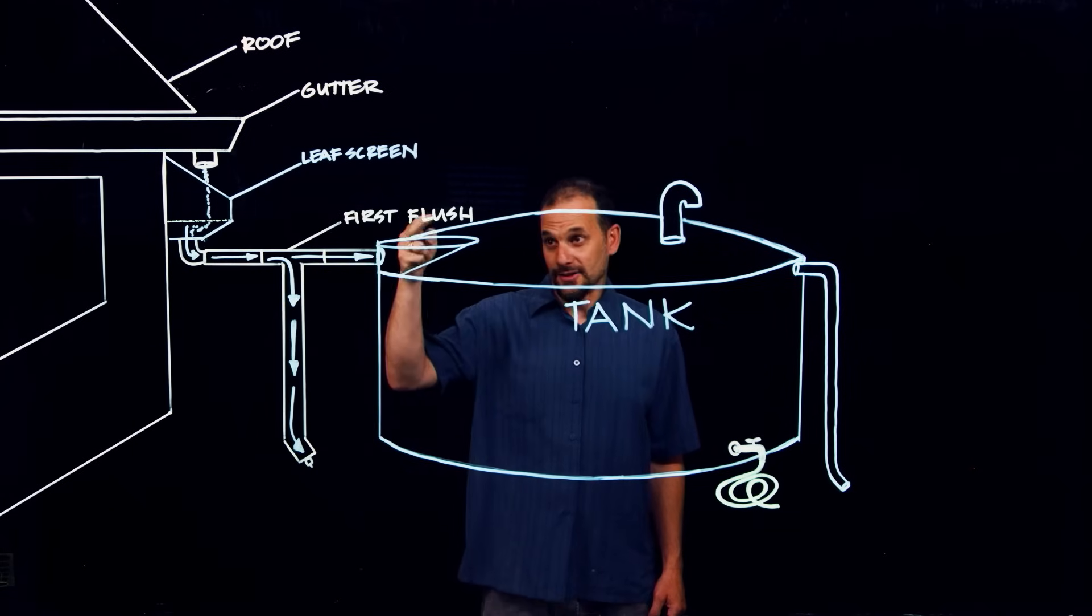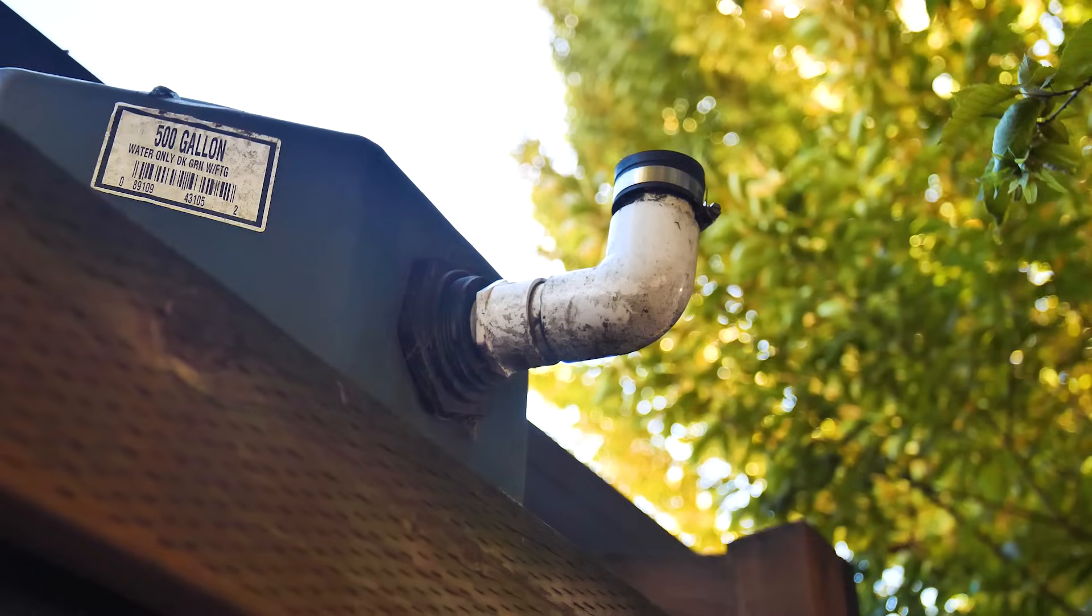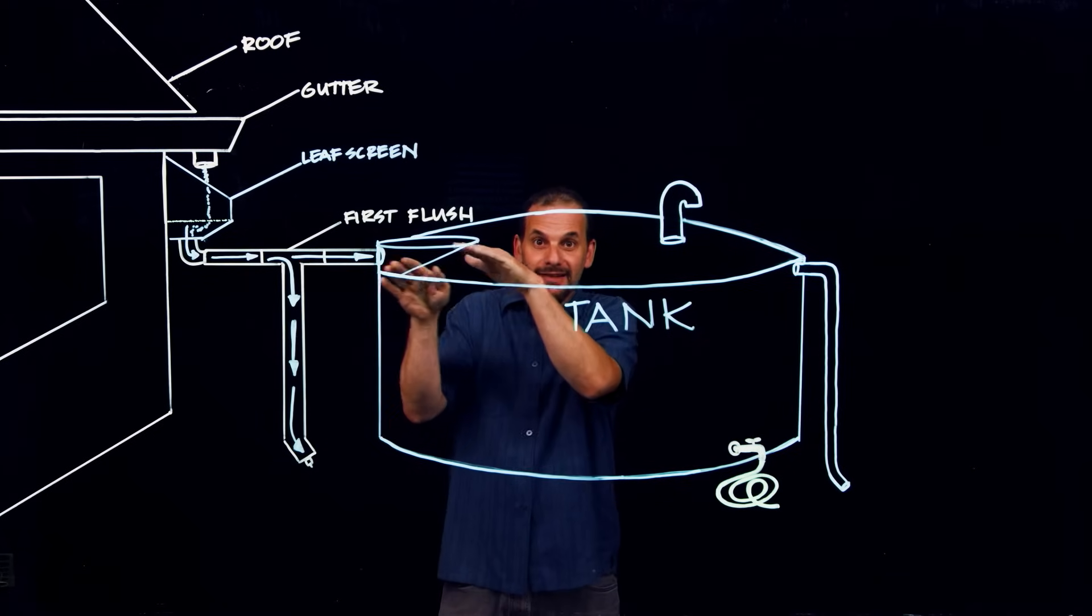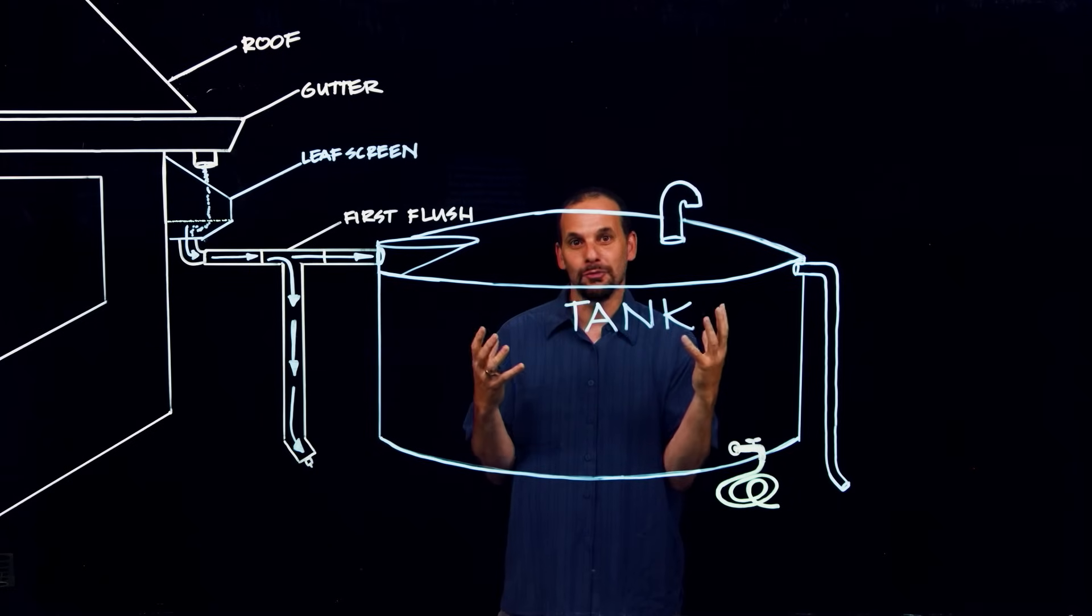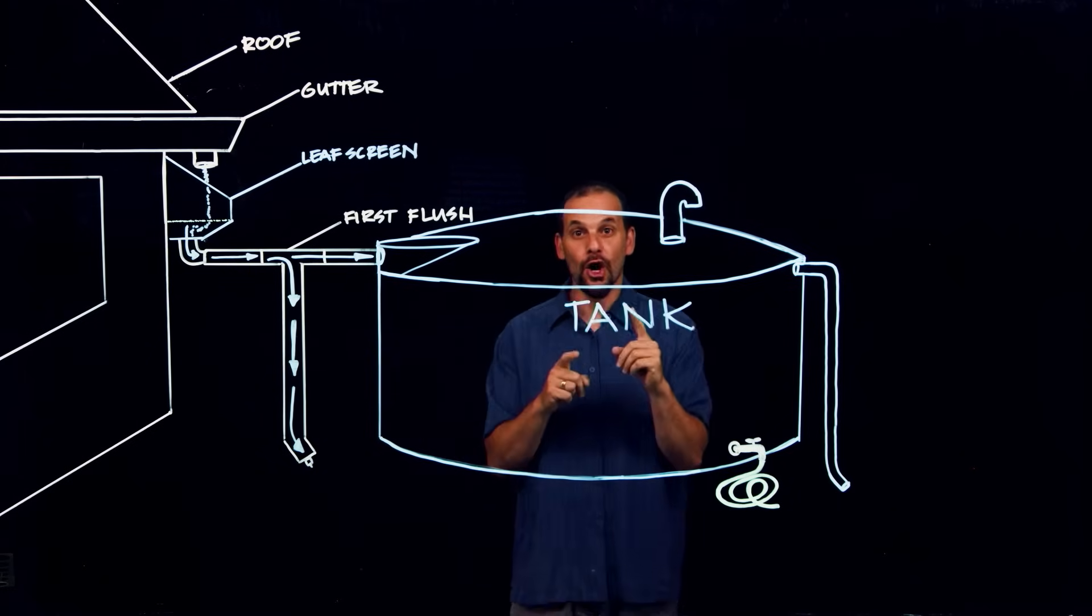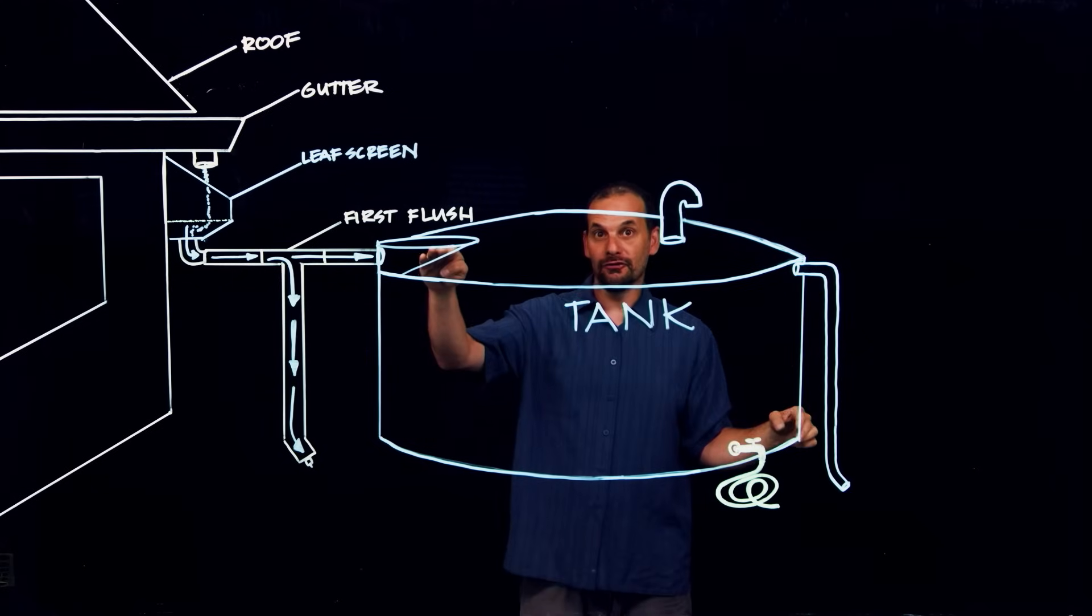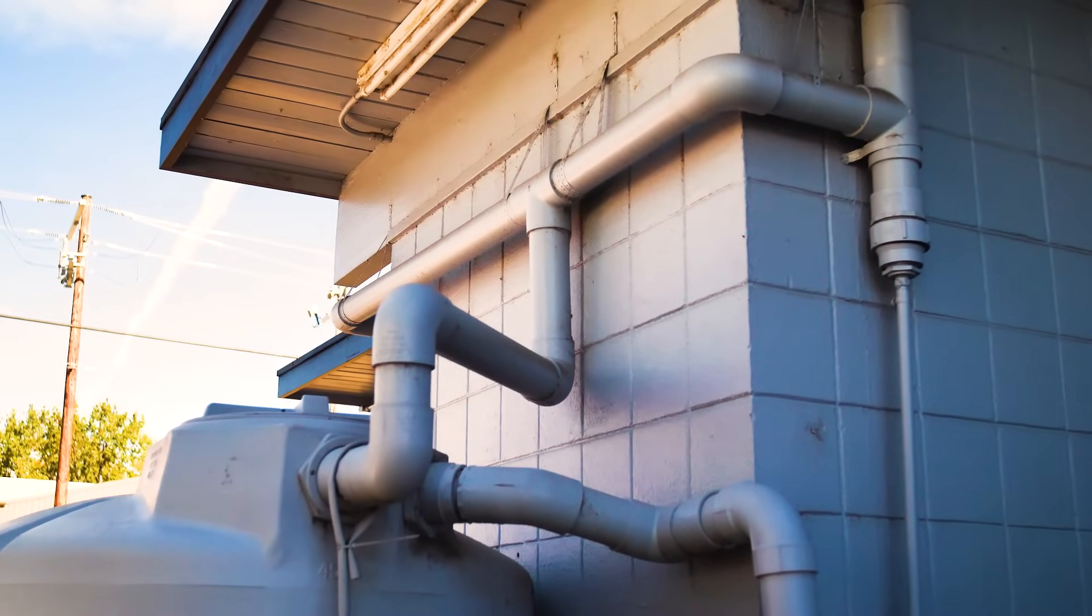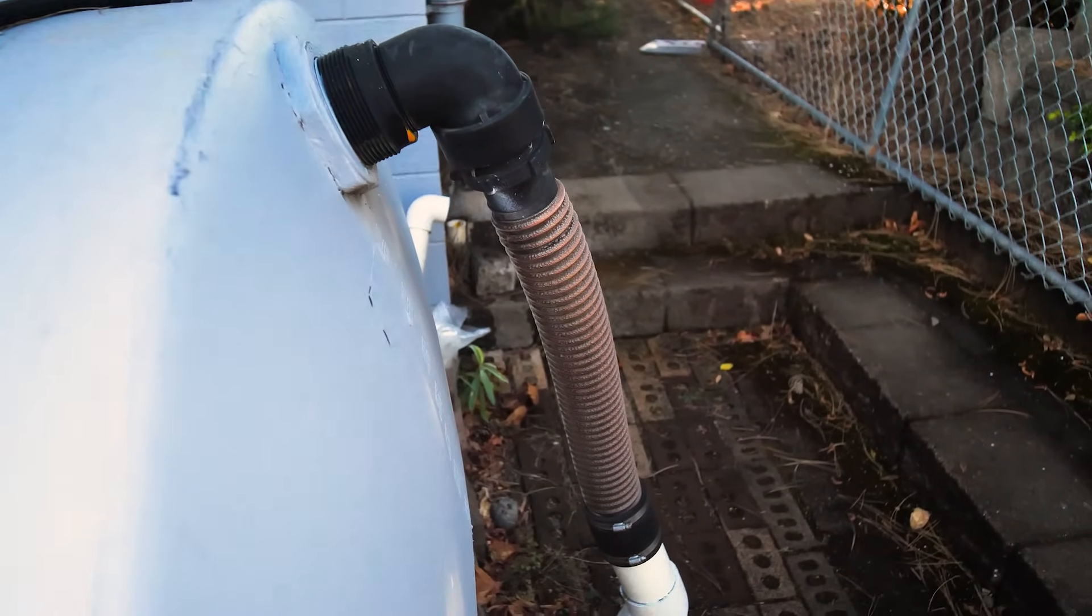So, you need an access port to get into the tank to clean or repair it sometimes. The tank needs a vent. So, when water is flowing into the tank and overflowing from a full tank, it doesn't create a vacuum and implode the tank. That can actually happen. You need an overflow that's the same size or bigger than the inflow. So, when the tank is full and it's raining super hard and water is pouring in, water doesn't overwhelm the pipe and start pouring out of the vent.